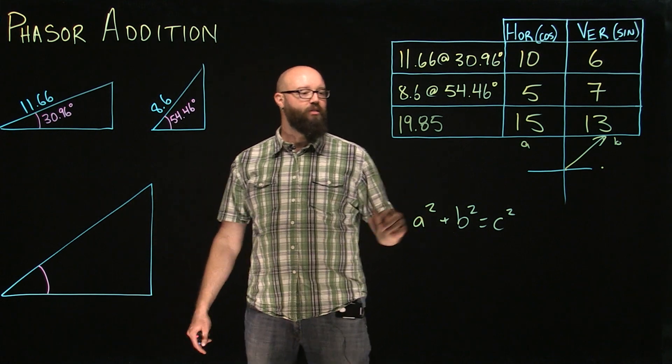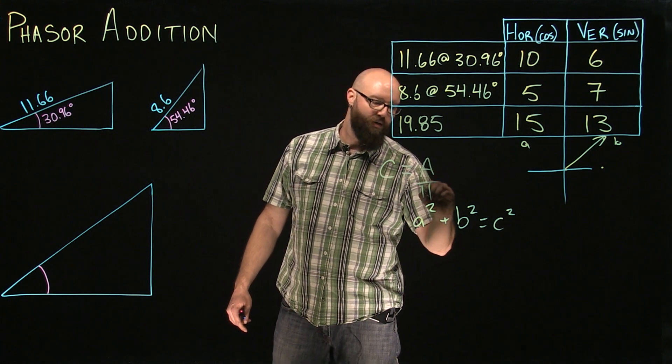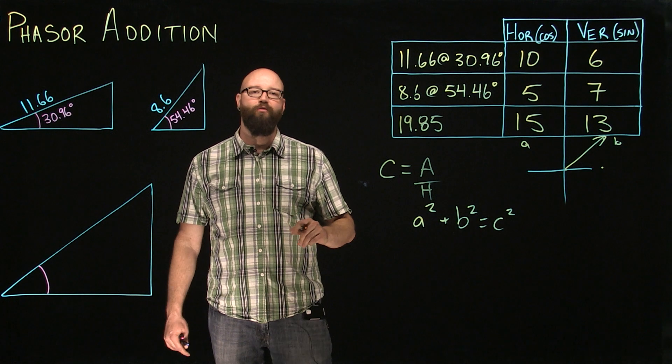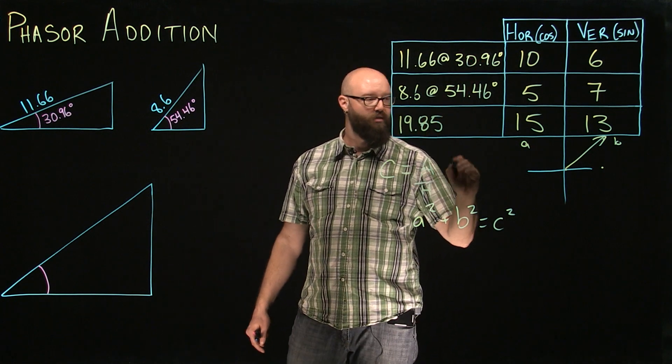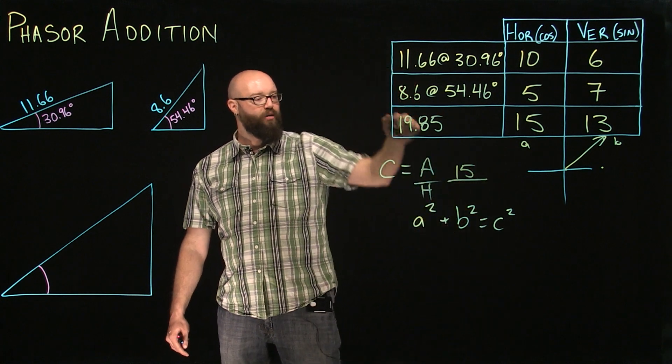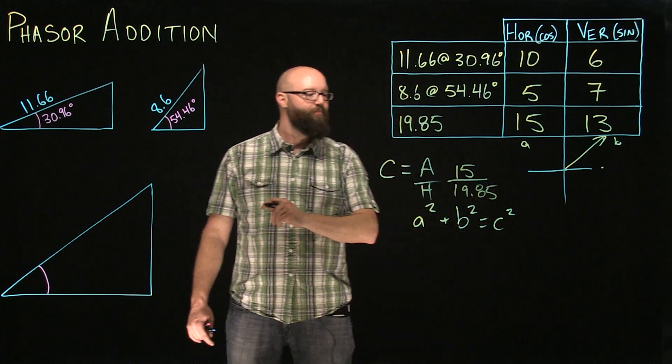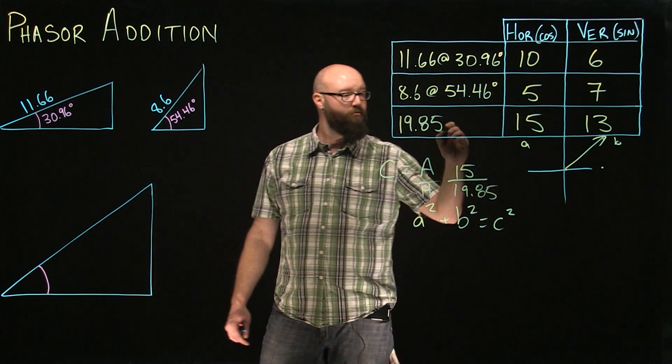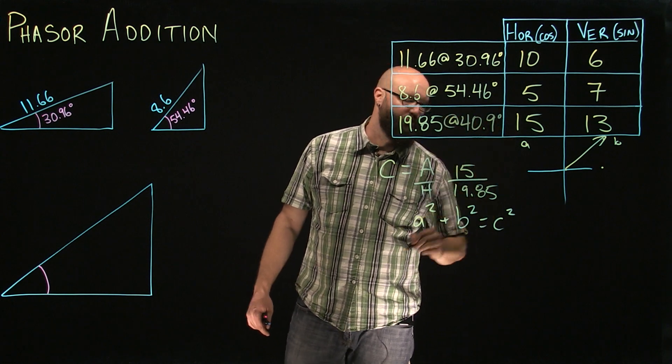All we have to do to find the angle is simply use our tangent function or our cosine function from SOH CAH TOA. Substitute, as I said, our horizontal will be our adjacent, which is 15 divided by our hypotenuse of 19.85. This should give us an angle of 40.9 degrees.